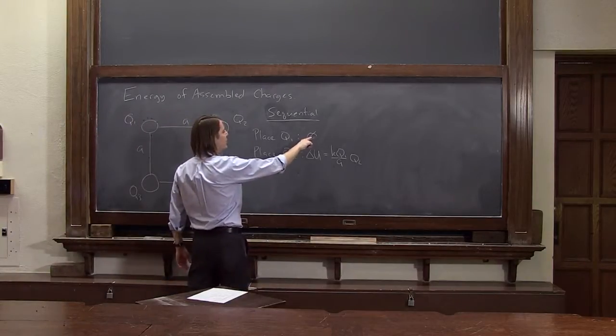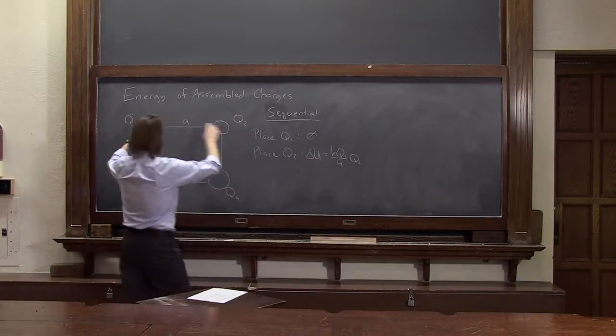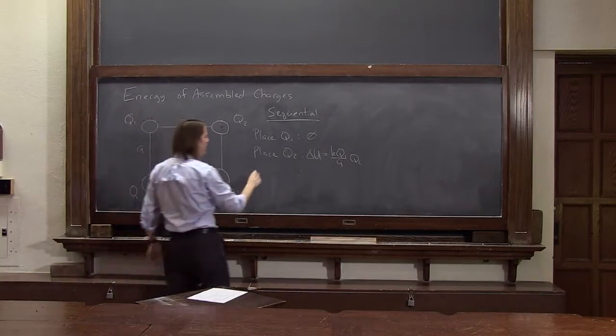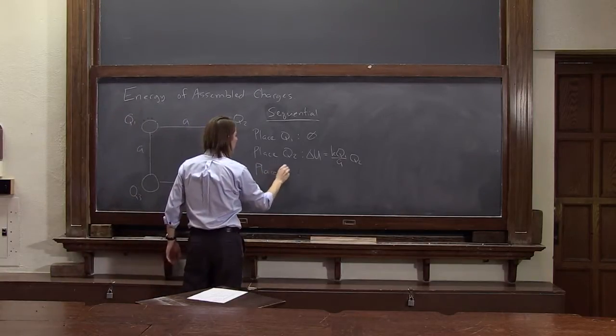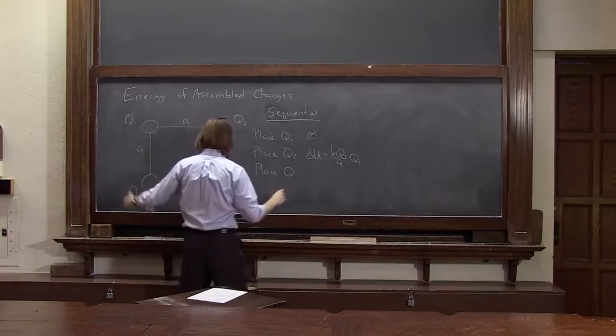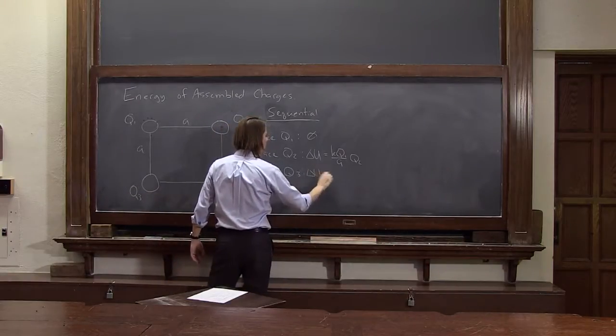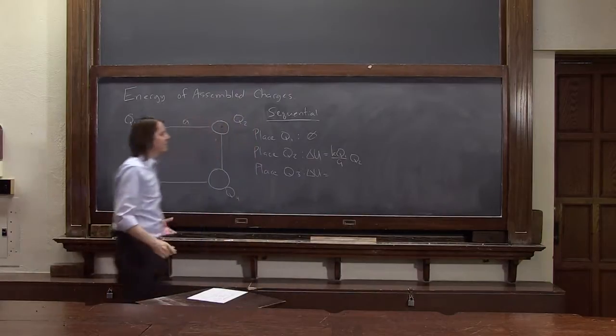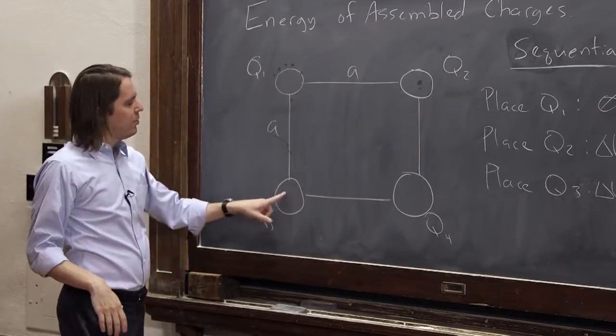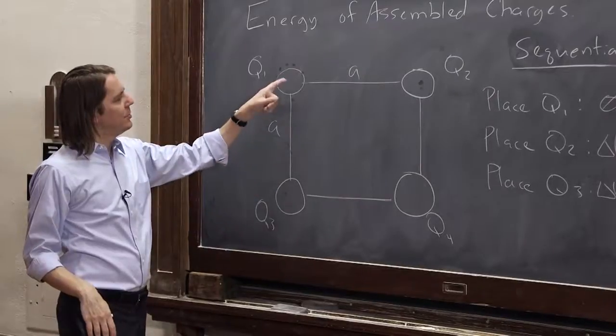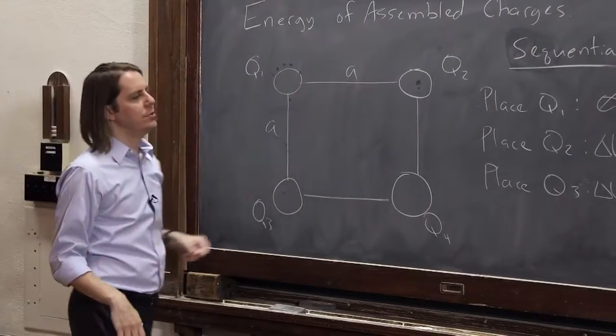So far, it was free to bring in the first one. Bringing in the second one kind of had to push a little bit against the first one. Now let's place Q3. How much energy? How much potential energy do we create? When you're bringing Q3, it's now pushing against the potential due to Q1 and the potential due to Q2.